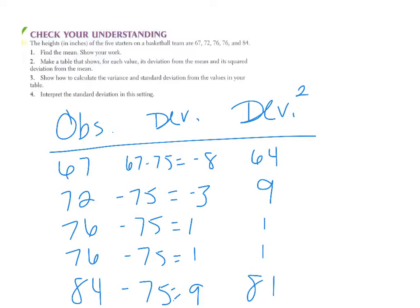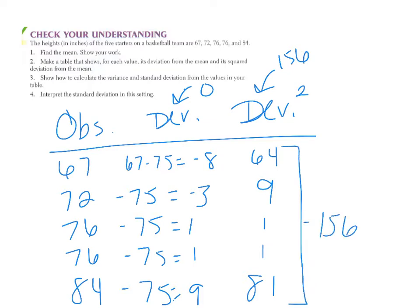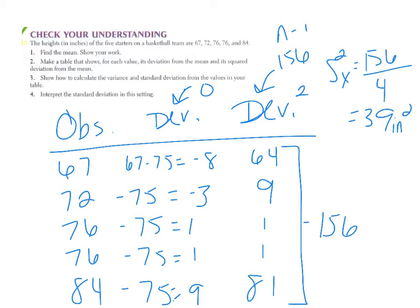Part three asks us to calculate the variance and standard deviation. The deviations column totals zero, and the squared deviations column totals 156. So the variance is 156 divided by 4, since n minus 1 equals 5 minus 1 equals 4. That gives a variance of 39 — in units of inches squared. To get back to inches, we take the square root: the standard deviation is the square root of 39, which is 6.24 inches.